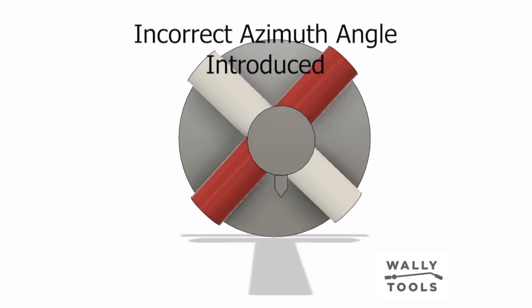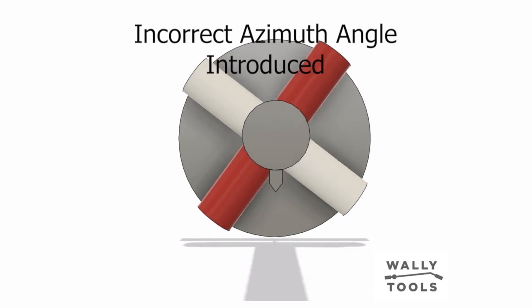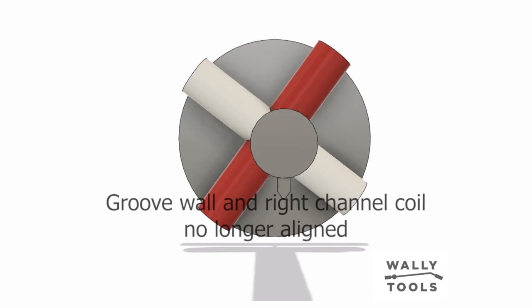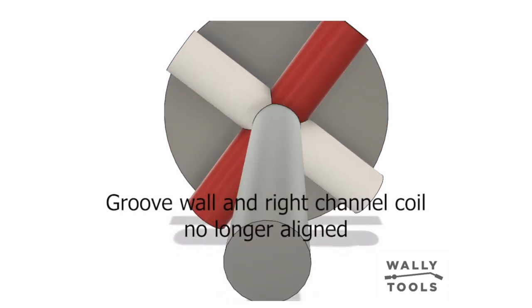All stylus cantilever assemblies are built with tolerances and we cannot expect that all of them will be perfect. In fact, exceedingly few are. So if the coil former is slightly rotated so that it is not orthogonal to the 45 degree groove wall, then what will happen?